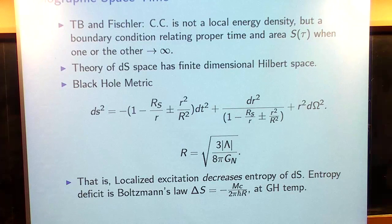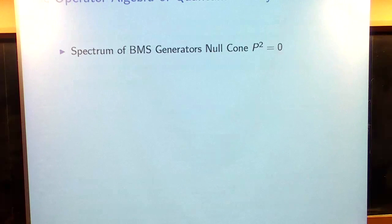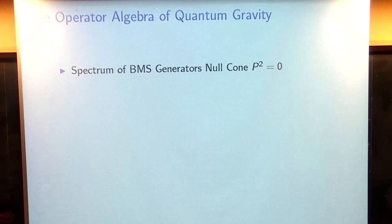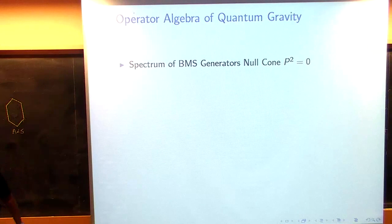This is the most important principle that I'm going to tell you about: local excitations are constrained states of the fundamental degrees of freedom. Now I'm going to talk about how to think about what the actual fundamental degrees of freedom are — what I think the operator algebra of quantum gravity is. I'll do it by thinking about asymptotically flat space, then back off to a finite causal diamond, and for the de Sitter case just stop at that finite causal diamond.